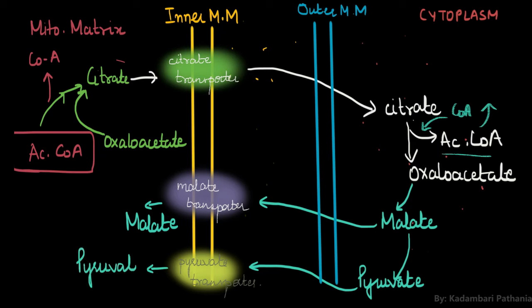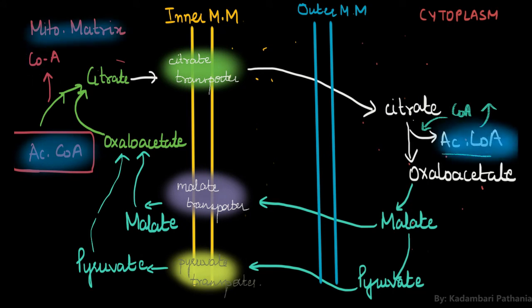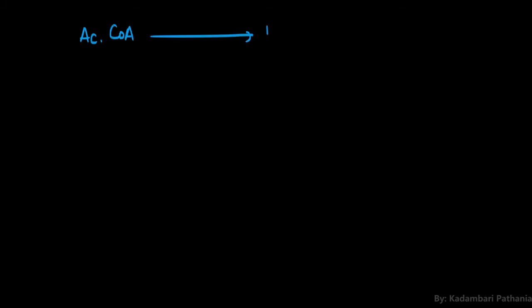Malate can either enter the mitochondrial matrix via the malate transporter, or malate can be converted into pyruvate, which then enters via the pyruvate transporter into the mitochondrial matrix. Both pyruvate and malate can again be utilized for the formation of oxaloacetate. This is how acetyl coenzyme A is transported from the mitochondrial matrix into the cytoplasm via transporters in the inner mitochondrial membrane. Now acetyl coenzyme A is present in the cytoplasm.